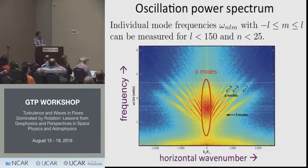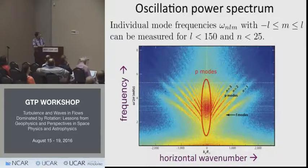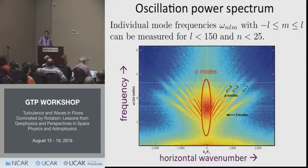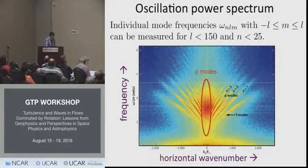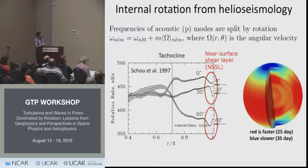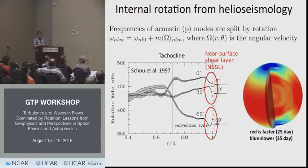If we look at the oscillation power spectrum, the x-axis has horizontal wave number and the y-axis has temporal frequency. Focusing on modes of low degrees — less than 150 — these modes are trapped not only in the vertical direction but also in the horizontal direction. They have very long lifetimes and we can measure individual frequencies. In particular, we can measure the splitting due to rotation: modes with different azimuthal orders have slightly different frequencies from which we can infer the internal rotation.